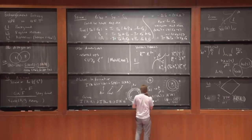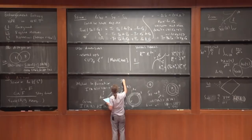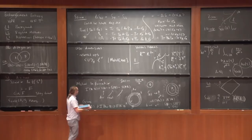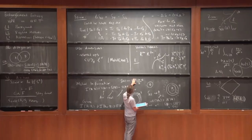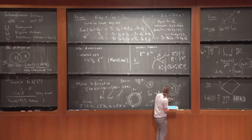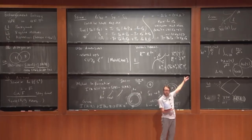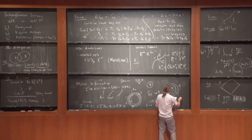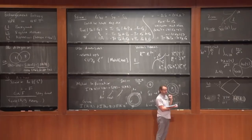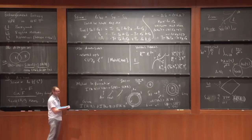One nice thing the path integral gives you is a way to compute ground states. To do that, take IT and Wick rotate: IT to -T (Euclidean). This time evolution for large T projects onto the vacuum. By inserting a complete set of energy eigenstates, the thing that survives in the limit T→∞ is the lowest energy state — the vacuum. So we hold fixed the bottom boundary condition and vary the top, giving us a path integral representation for the ground state: integrating the Euclidean action from Euclidean time minus infinity to phi(x).